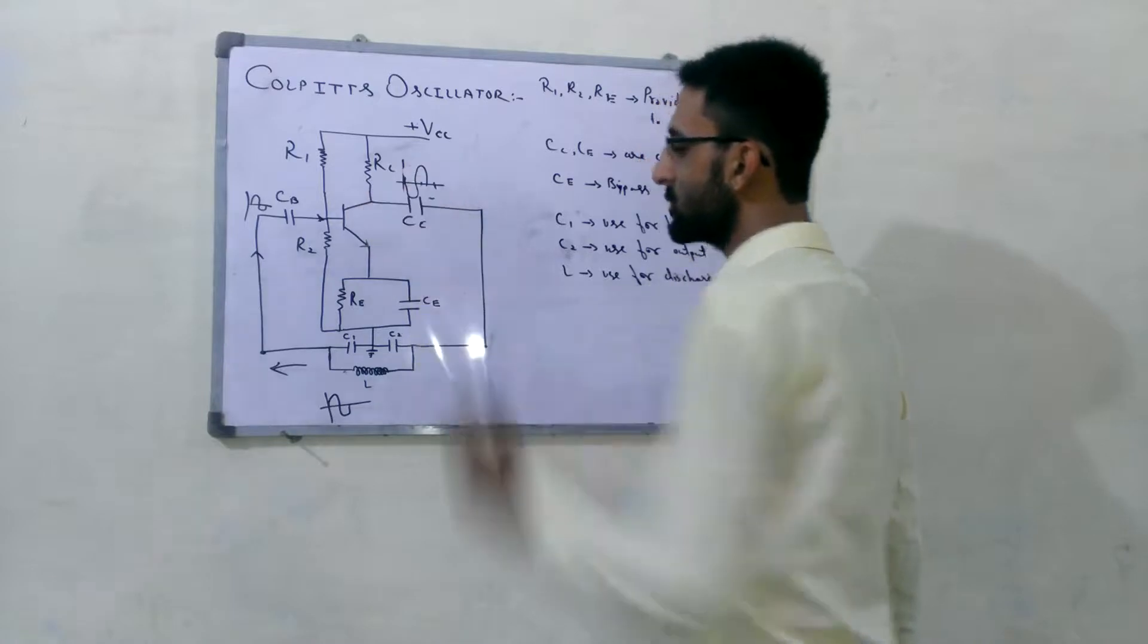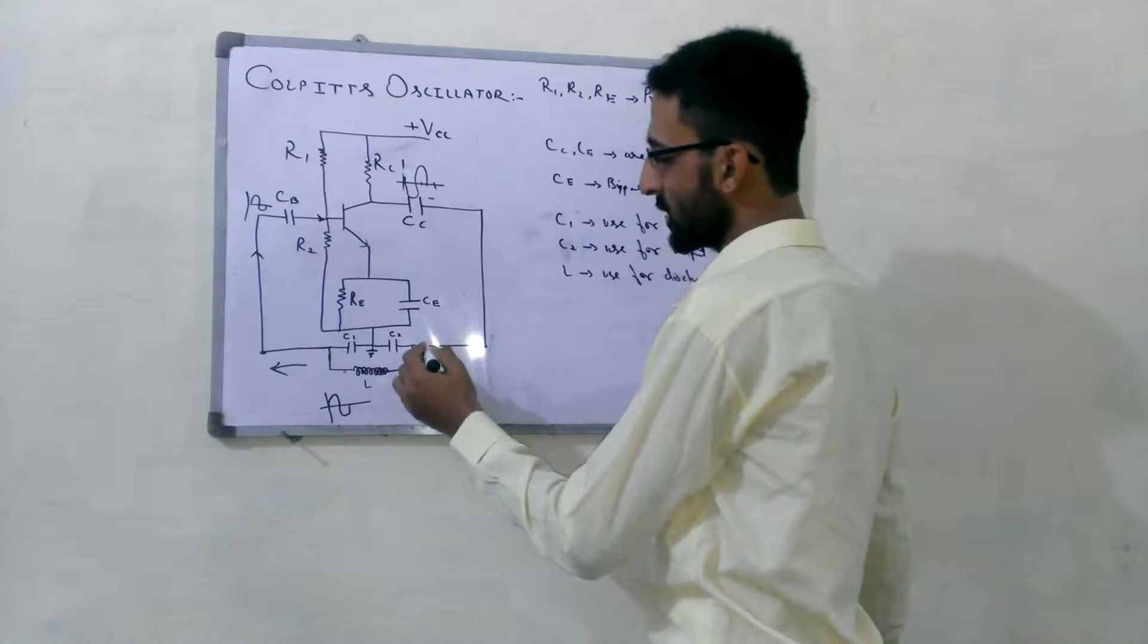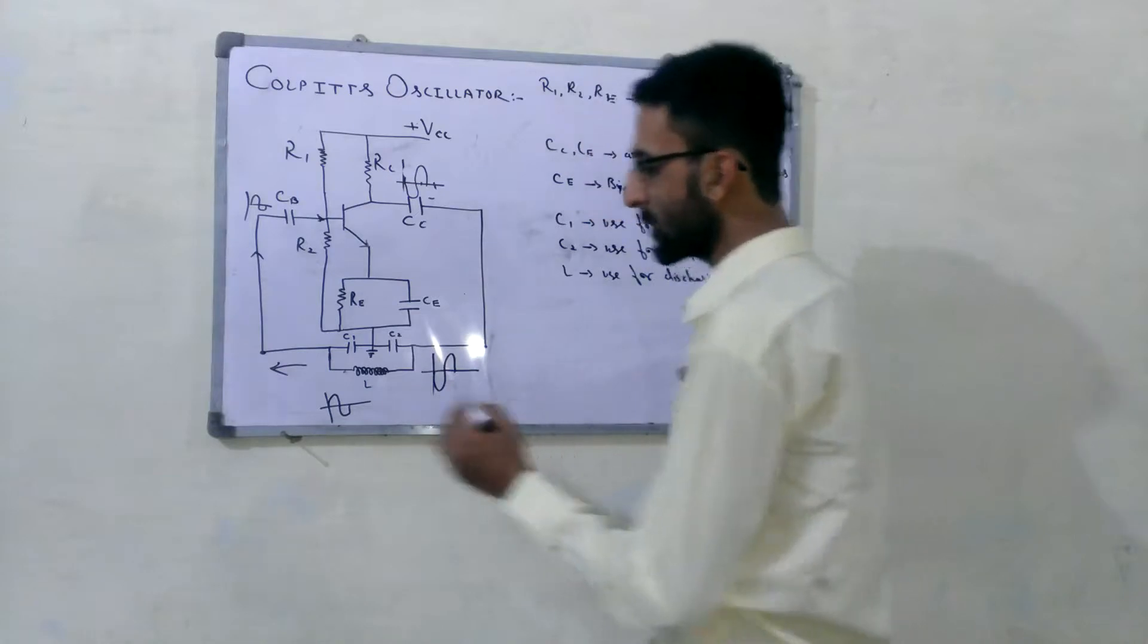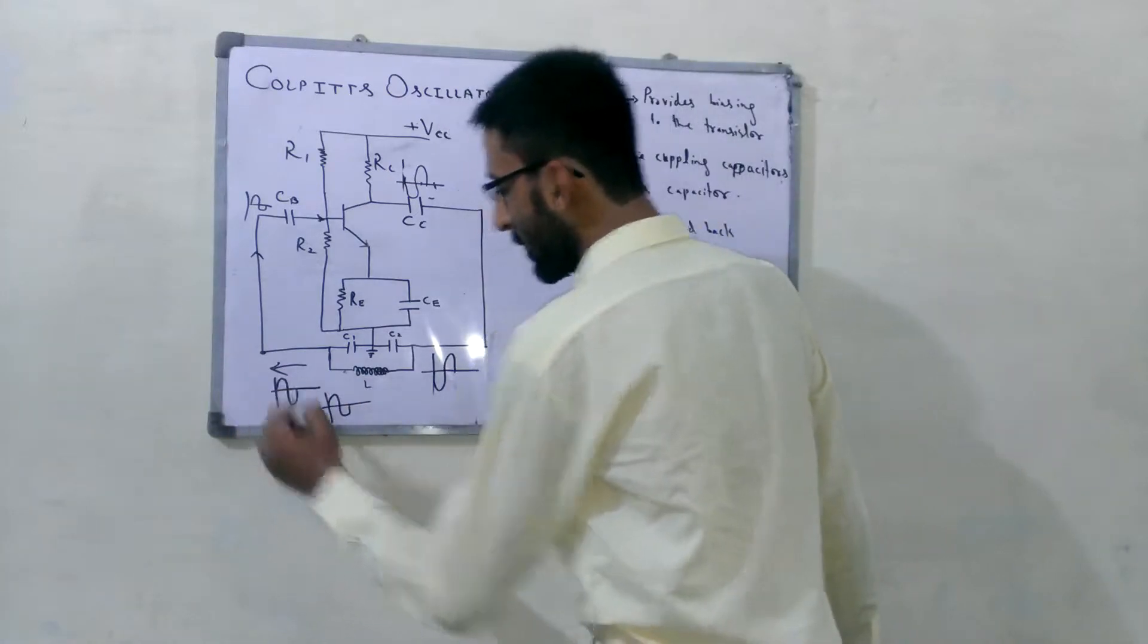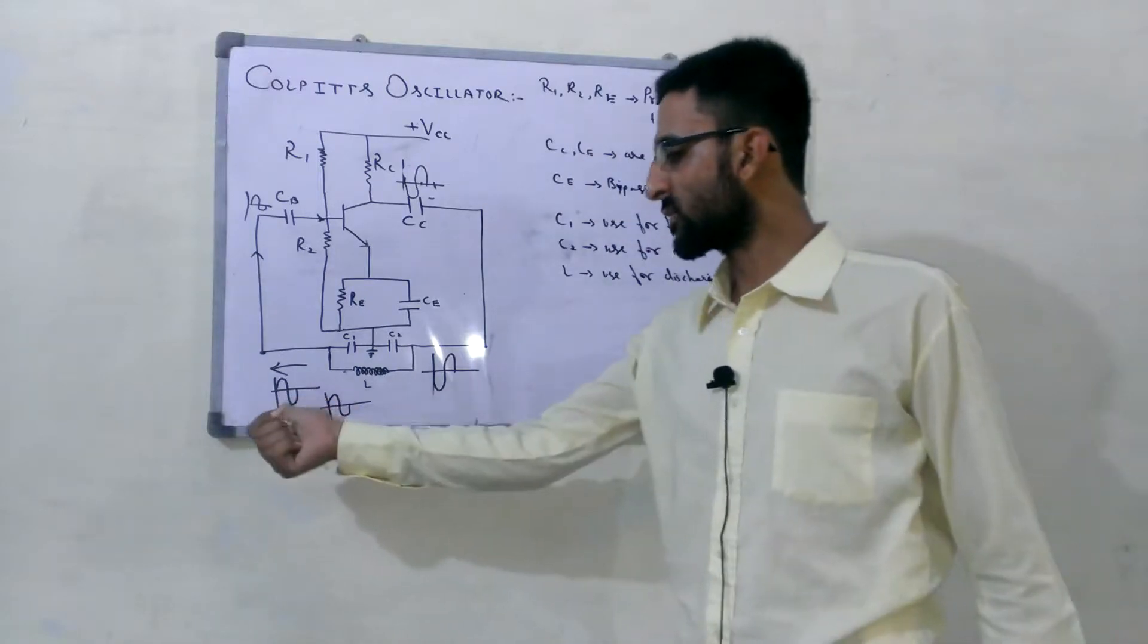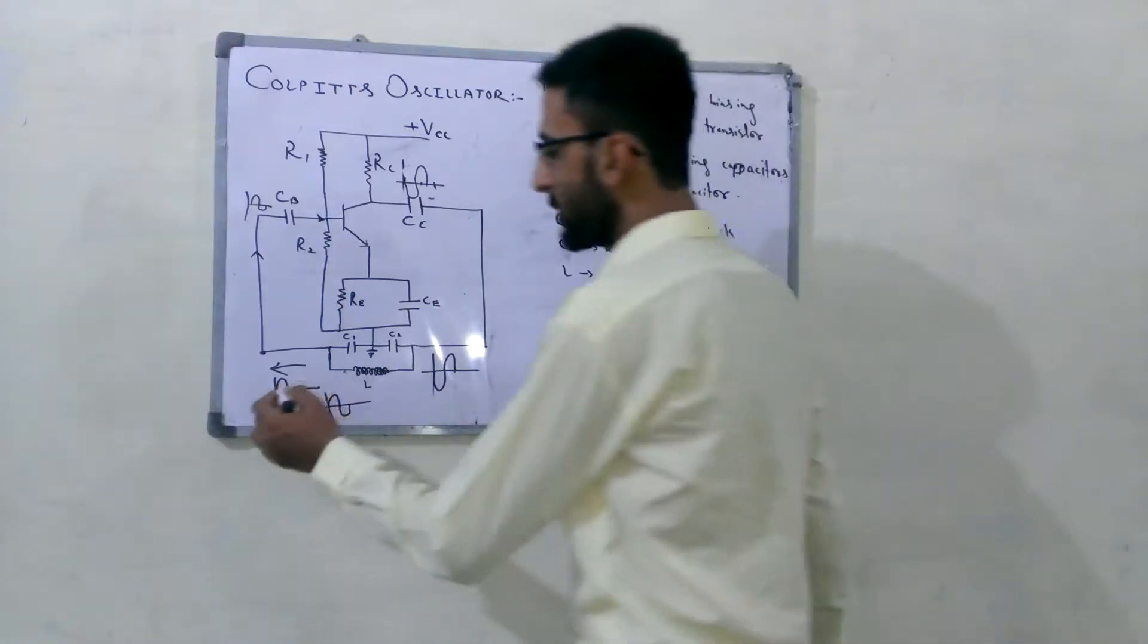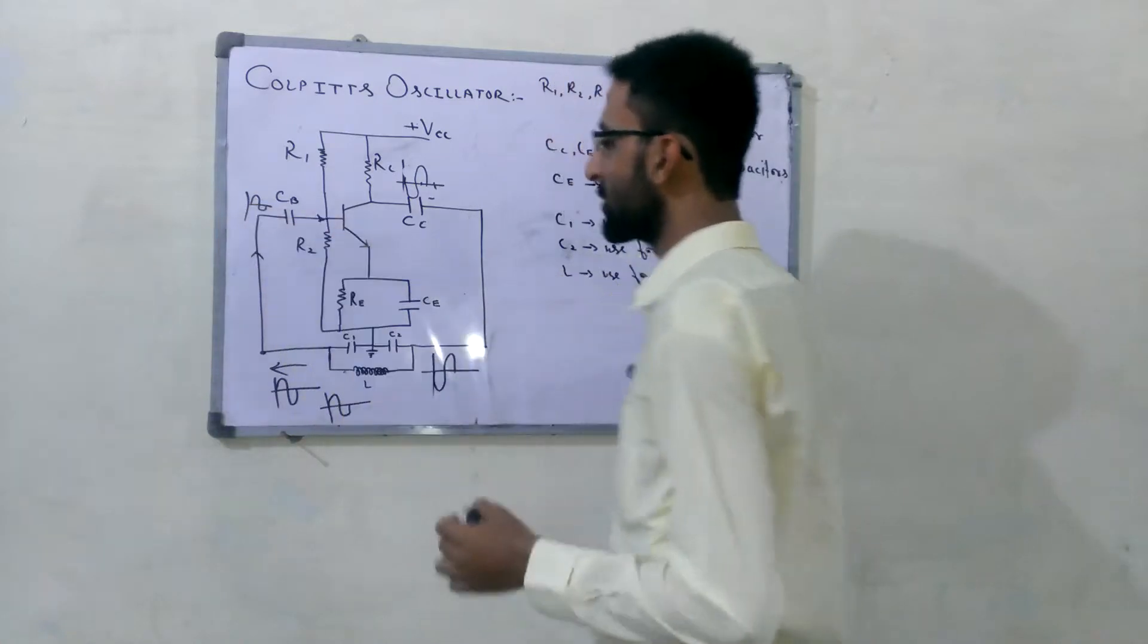As shown here, this signal reaches here, and then this inverted signal is converted into this type of signal with 180 degree phase difference, then this again goes towards the base of the transistor.